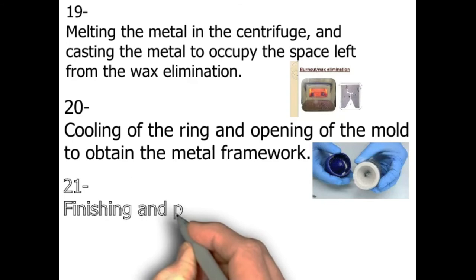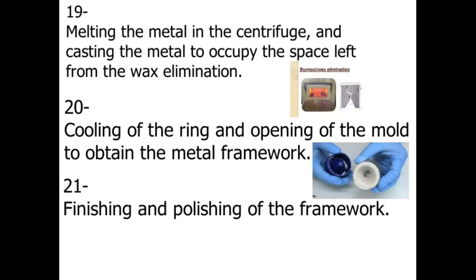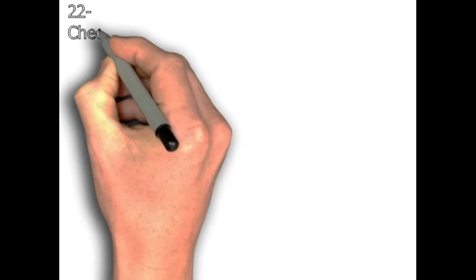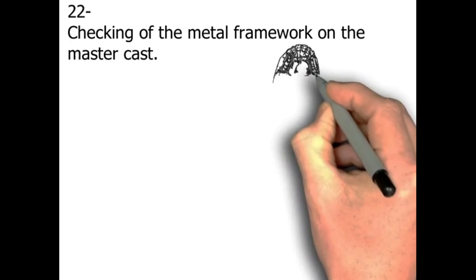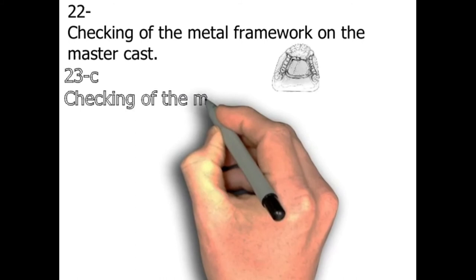Step number twenty-one: finishing and polishing of the framework — that's a laboratory step, and the picture shows the finishing and polishing of the framework. Step number twenty-two: checking of the metal framework on the master cast — that's a laboratory step, and the picture shows the master cast and metal framework.